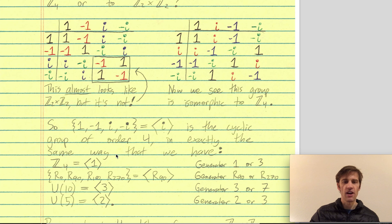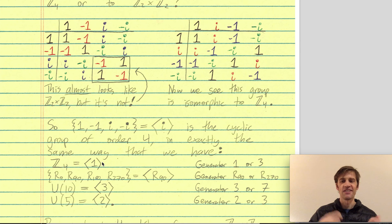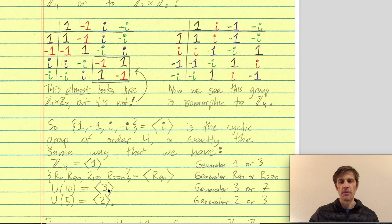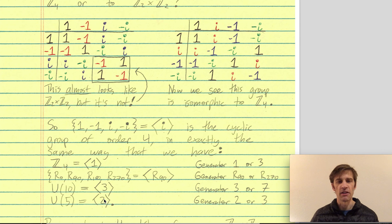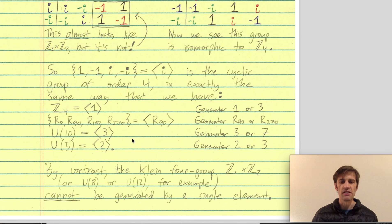All of the groups previously seen as isomorphic to Z mod 4 were also cyclic. Z mod 4 is generated by 1 (since 1+1=2, 1+1+1=3, 1+1+1+1=0 mod 4). The rotations group is generated by a 90-degree rotation. The group of units mod 10 is generated by 3, and units mod 5 by 2. So Z mod 4 is cyclic, and any group isomorphic to it is also cyclic. By contrast, the Klein 4 group Z2 cross Z2 and any group isomorphic to it is not cyclic — it cannot be generated by a single element.